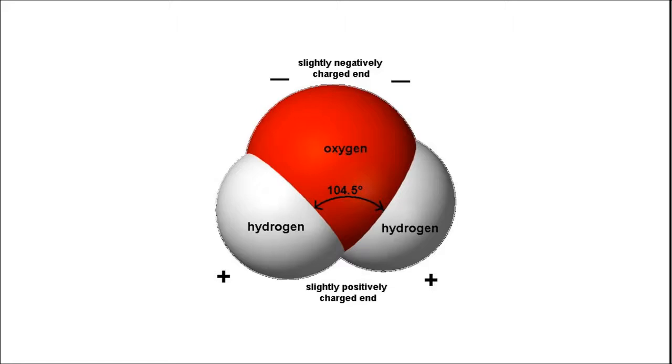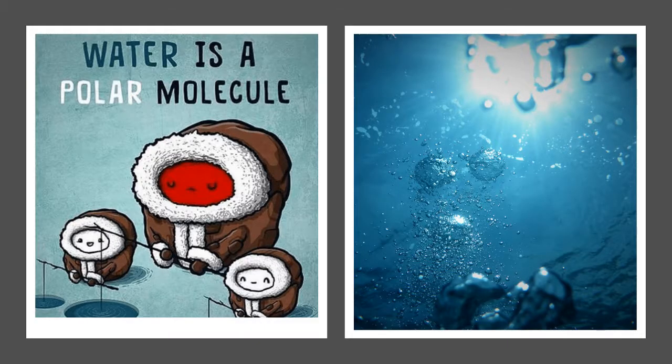However, because of the unequal arrangement of its electrons, the oxygen end is negative and the hydrogen end is positive, making water polar. The hydrogen and oxygen atoms within water molecules form polar covalent bonds.